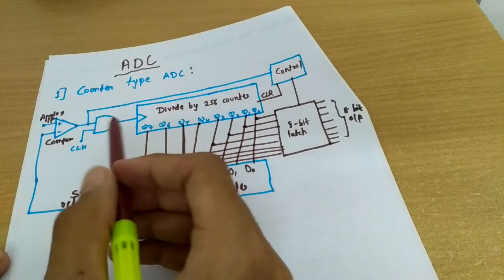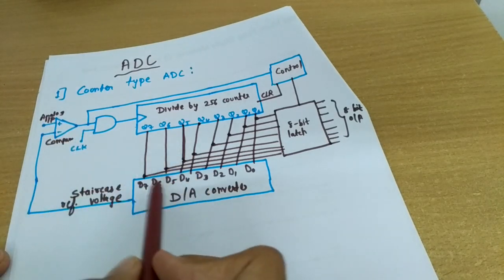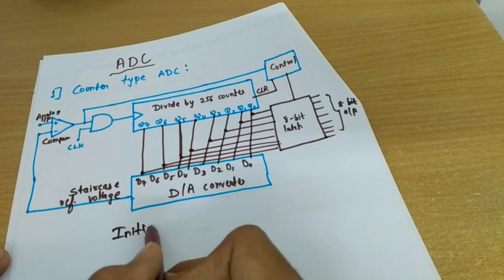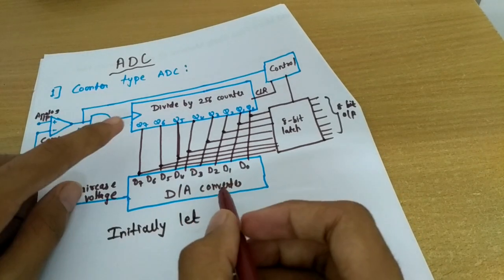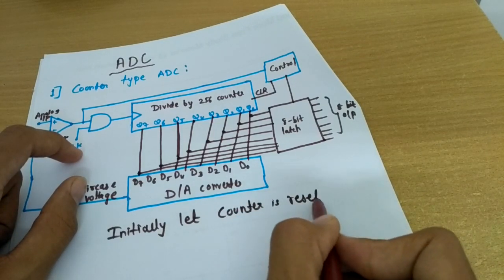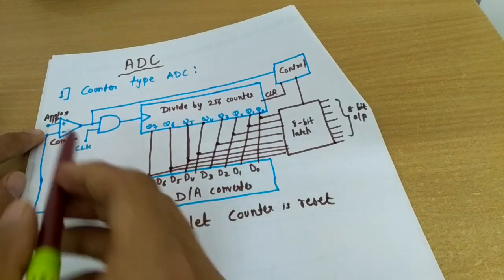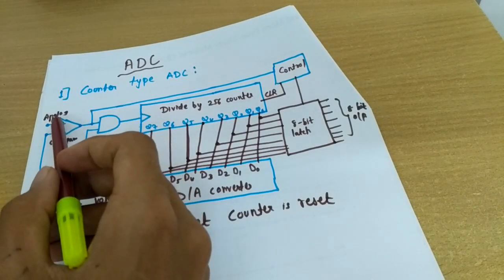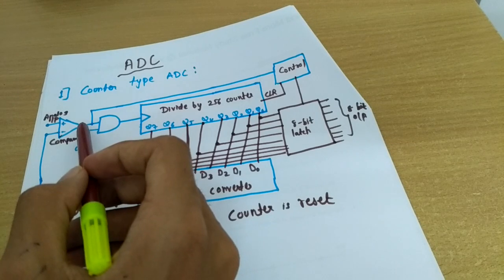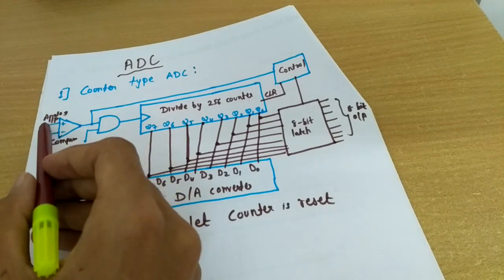Now let me explain how it works. The analog input is applied to the non-inverting terminal of the op-amp, which serves as the comparator, and the staircase reference voltage is applied to the other input. Initially, assume the counter is reset, so all inputs are zero, meaning the output will be zero. Whenever the analog input is higher than the reference input, the comparator produces a high signal; otherwise it produces a low signal.